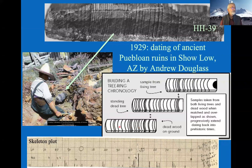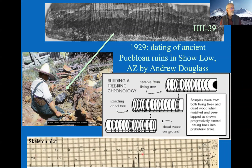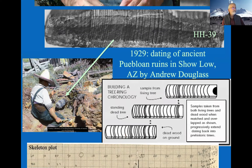Tree ring scientists measure rings and create a sort of barcode they can match with older trees or living old trees in order to date something to the year. The skeleton plot on the bottom shows a pre-computer technique using two-millimeter graph paper to plot narrow rings as tall lines, creating a barcode. Using multiple pieces of paper for different trees, you could match ring patterns even when samples varied in ring size. It's quite labor intensive.